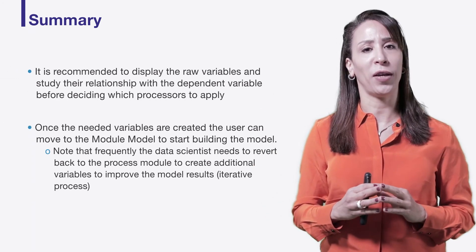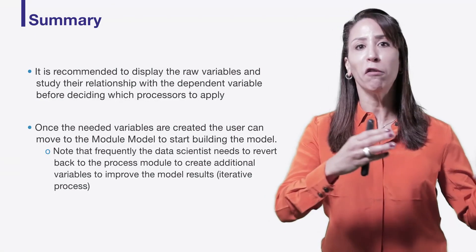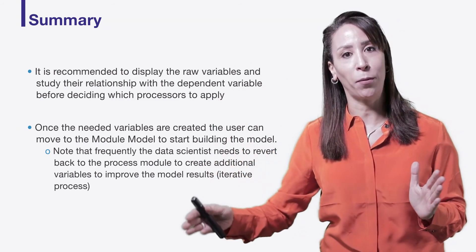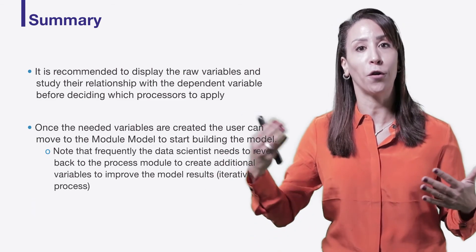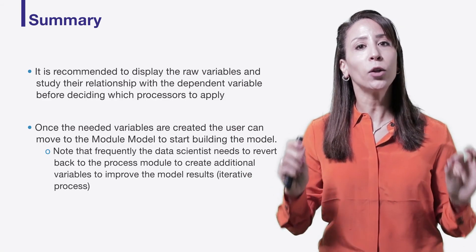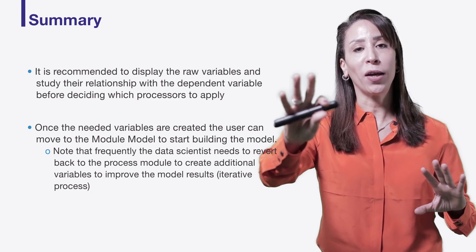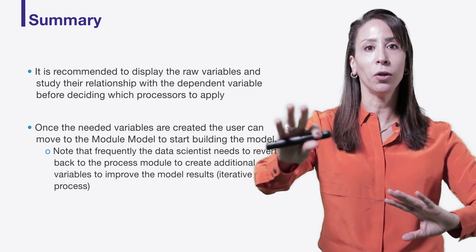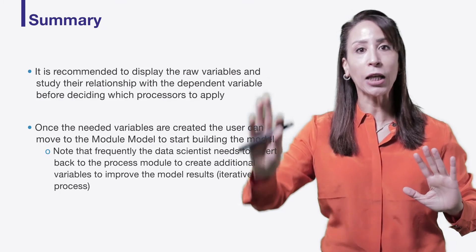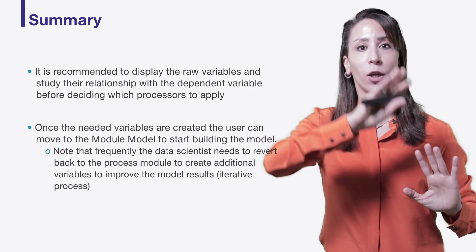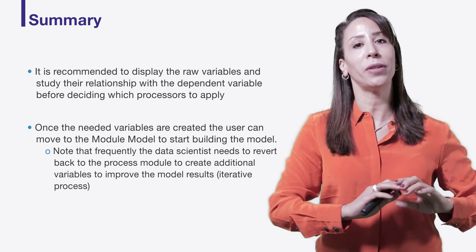Now that we have created those variables — to give you a sense of scale, a marketing mix modeling project would typically start with 50 to 100 raw variables, but at the end of the data processing stage you will find yourself with thousands of variables created for the modeling stage. Before ending this course, I want to emphasize that processing and modeling is an iterative process. You create additional variables, test them in the model, look at your residuals, and based on what you see you can move back to processing to create more variables. You do this iteratively until you stabilize your model and are happy with the size and random nature of your residuals.